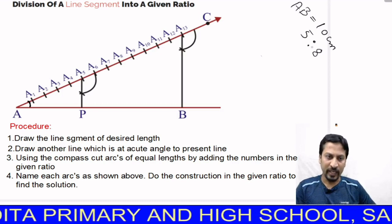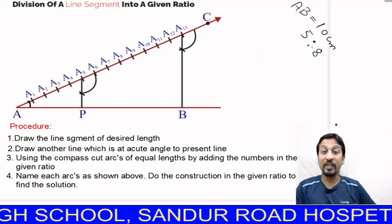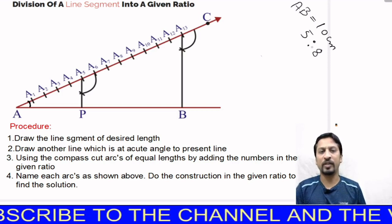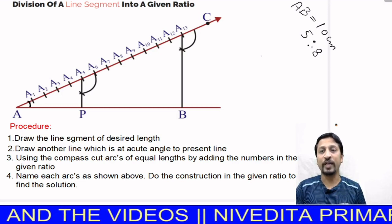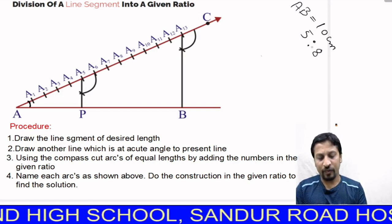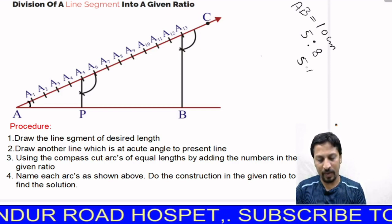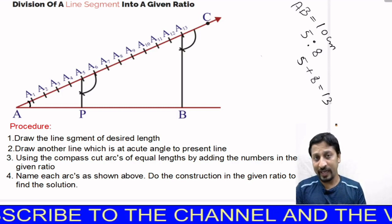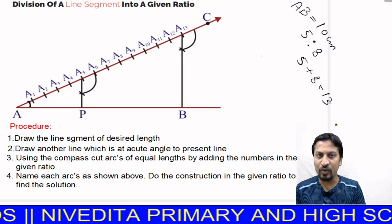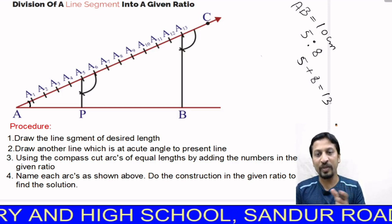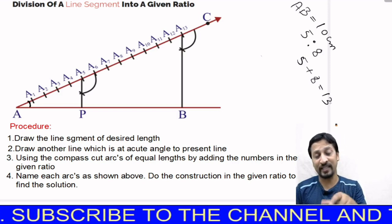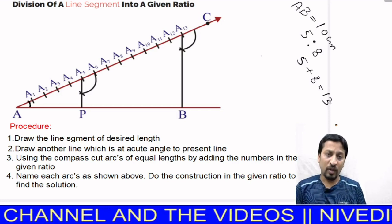Next, using the compass, cut arcs of equal length by adding the numbers of the given ratio. In this problem, the ratio is 5 is to 8. So totally, 5 plus 8 equals 13 divisions on line AC. Depending on the ratios given, you add them up and make that many divisions. Those arcs should be of equal length — set a specific compass length and keep cutting arcs without changing it.